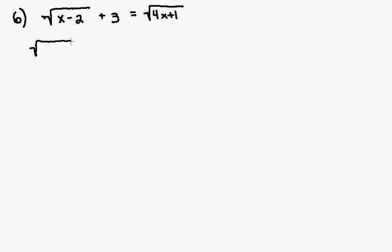I can rewrite that so it looks like this: the square root of 4x plus 1 is equal to the square root of x minus 2 plus 3. It just makes it easier if I have the two-termer on the right side. I'll show you why.